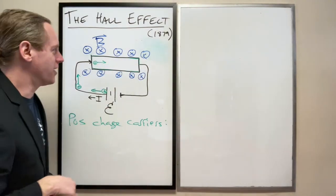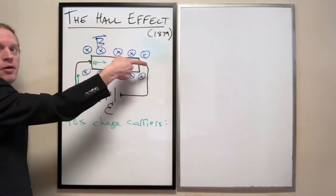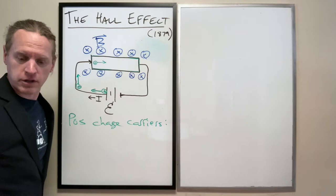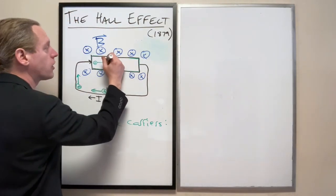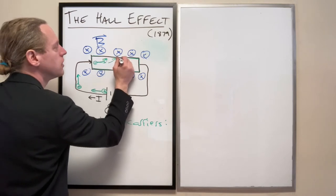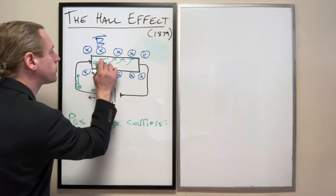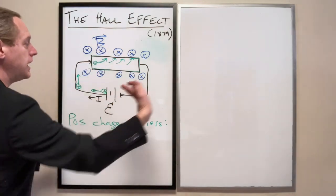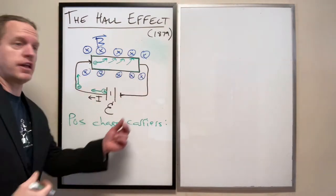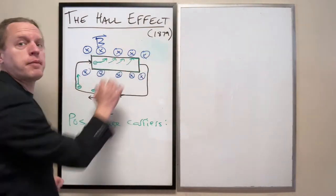V crossed with B gives them an upwards deflection. So these positive particles are going to deflect upwards and they're going to pile up on the top surface here. So if in fact it's positive particles that are going through the wire, they're all going to be deflected towards the top part of this copper slab here.